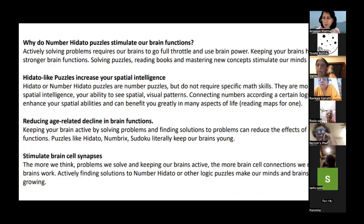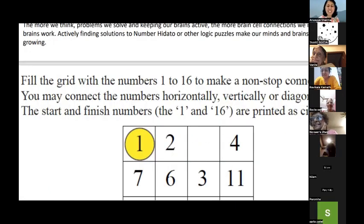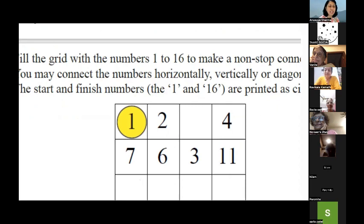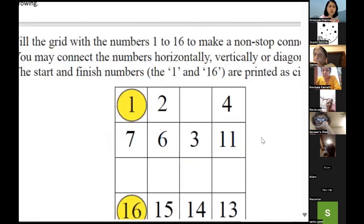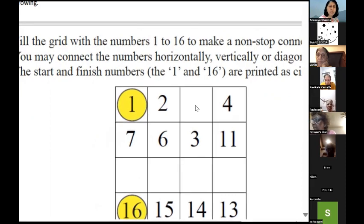Let me introduce you to this new game called Hitado, in which you have to put in all the numbers. So you have to fill the grid with the numbers 1 to 16 and make a non-stop connection path, right? So no breakage. You may connect the numbers horizontally, vertically, diagonally. Just say here if you can see, there's 1, 2, then 3 is there and 4 is here. What do you think will come over here?